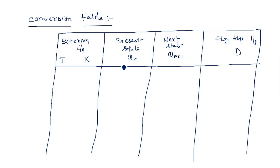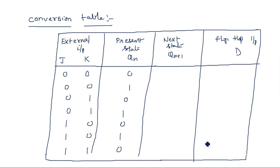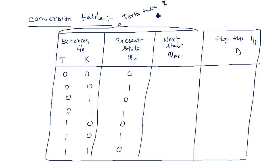We have J, K, and Qn as three inputs. The rows are: 0 0 0, 0 0 1, 0 1 0, 0 1 1, 1 0 0, 1 0 1, 1 1 0, 1 1 1. This conversion table combines two tables: up to the next state column it is the truth table of the JK flip-flop, and the Qn+1, Qn, and D columns form the excitation table of the D flip-flop.